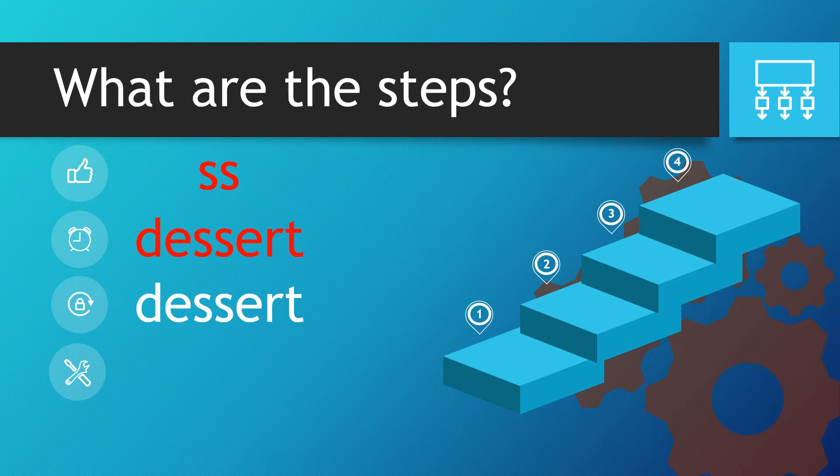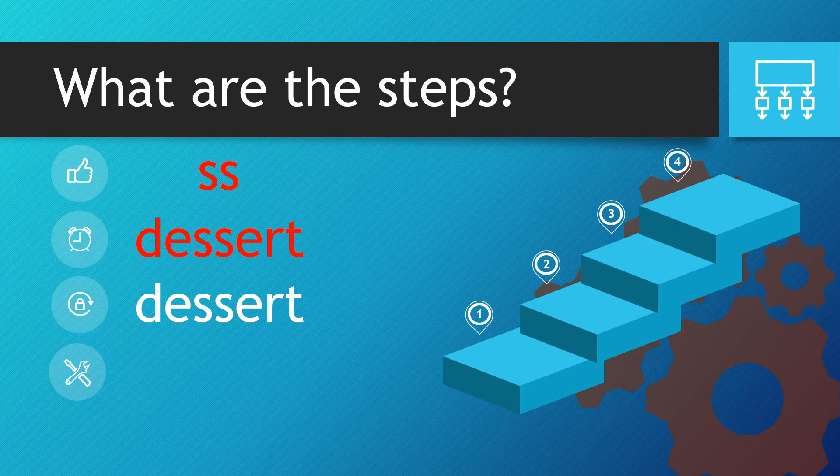The d and the e are easy to hear at the start. The e r t are easy to hear at the end. It is people getting confused with the single s or double s within this. Please ensure you put the double s for two spoons.